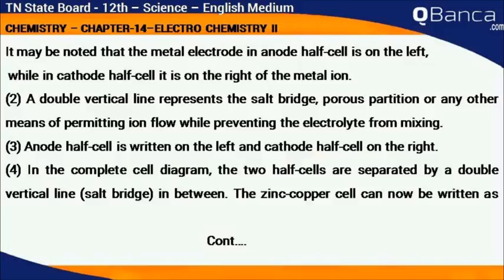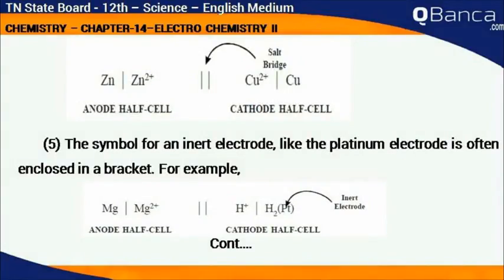A double vertical line represents the salt bridge, porous partition, or any other means of permitting ion flow while preventing the electrolytes from mixing. The anode half cell is written on the left and the cathode half cell on the right. In the complete cell diagram, the two half cells are separated by a double vertical line (salt bridge) in between.